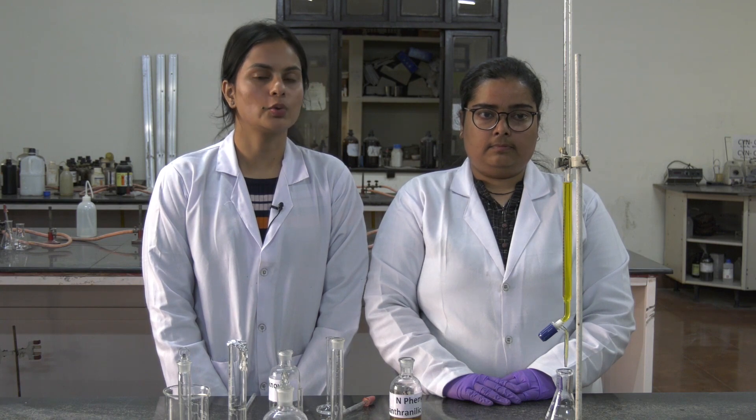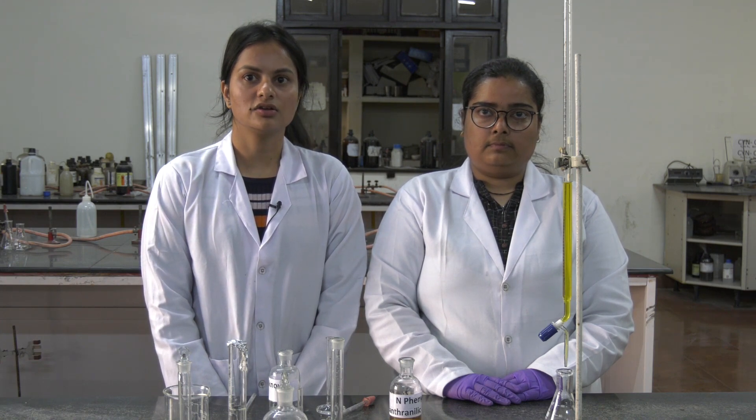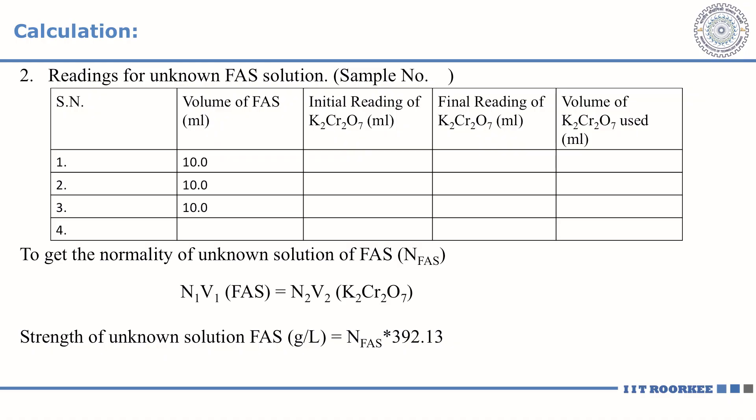For the titration of the unknown solution of ferrous ammonium sulphate salt, the initial reading of the burette was 20 ml and the final reading was 34.8, so the change is 14.8. Repeat this experiment to get concordant readings. After completion, determine the normality of the unknown solution using the formula N1V1 = N2V2, and then determine the strength by the formula: normality multiplied by the equivalent weight of Mohr salt, that is ferrous ammonium sulphate solution.